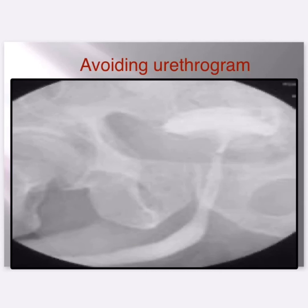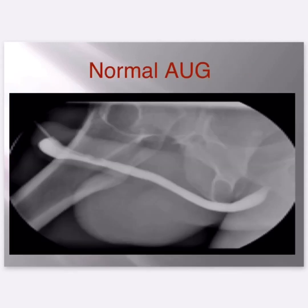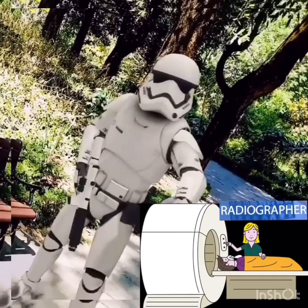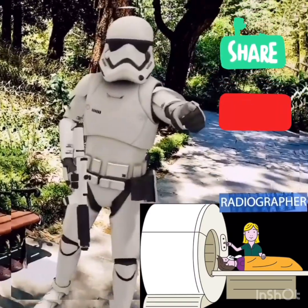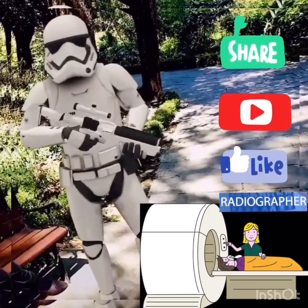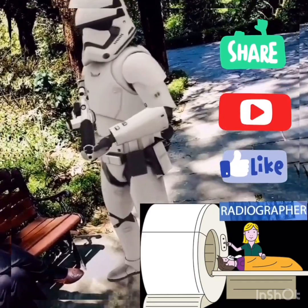This image shows a voiding urethrogram. This image shows a normal RUG. For more radiography information, subscribe to my channel, like, share, and comment.